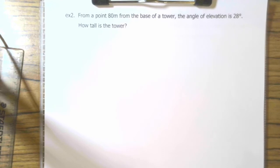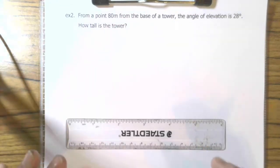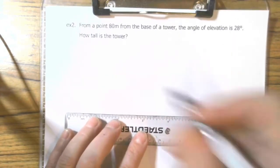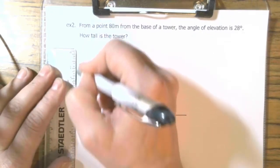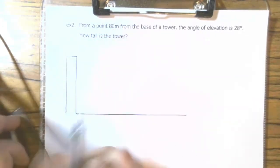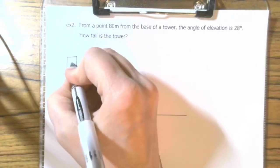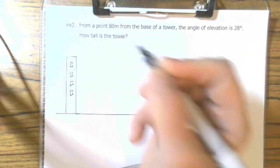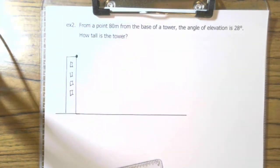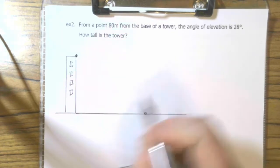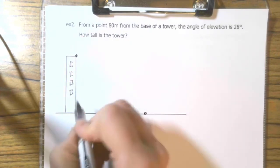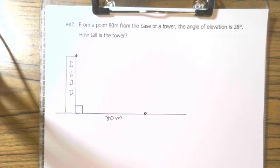So, our second problem says, from a point 80 meters from the base of a tower, the angle of elevation is 28 degrees. How tall is the tower? Okay. So, on this one, we have ground. We have our tower. Maybe our tower has windows in it. I don't know. But, the important thing is, remember that you're only assuming a single point in space. So, you pick the front edge. And, it says, from a point 80 meters from the base. So, from here out to here is 80 meters from the base.